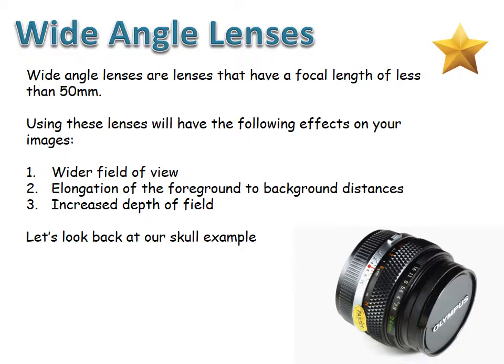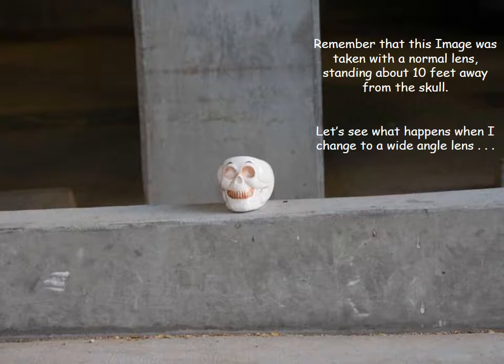On the other side of the spectrum, wide-angle lenses have a focal length of less than 50mm. Their effects are essentially the opposite of telephoto lenses: a wider field of view so you see more of the scene, elongation of foreground-to-background distances, and an increase in depth of field. Let's look back at the ceramic skull example. The normal-lens image was taken from 10 feet away — we can see some foreground, a bit of background, and decent depth of field.